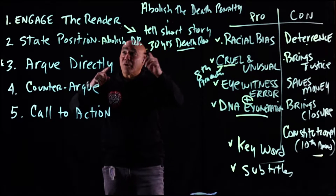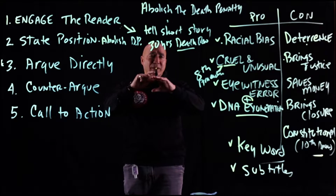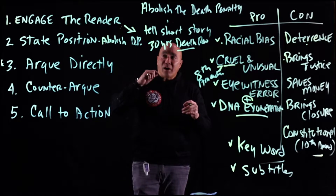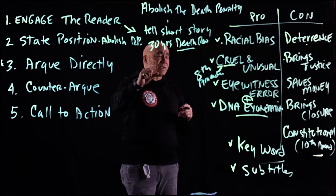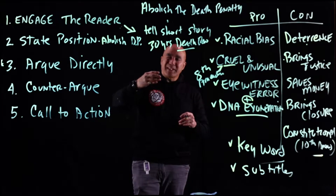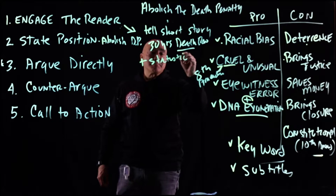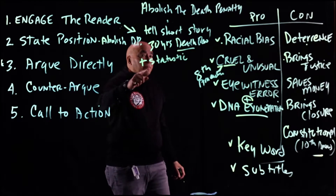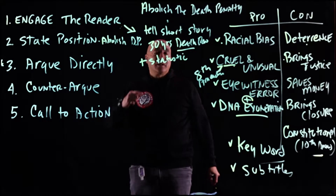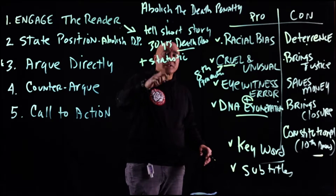I find a story that engages the reader and pre-frames my argument. I do not lecture, preach, or use first person to say how I feel. I simply tell the story with the key points and don't spend too much time — probably 100 words or 10 lines at most. Then I include one startling statistic — in this case, how many people in the United States are on death row at any one time. One story, one statistic — I've engaged the reader.